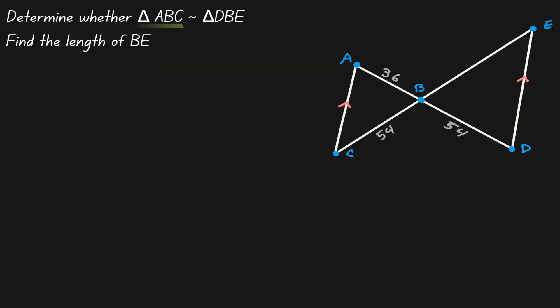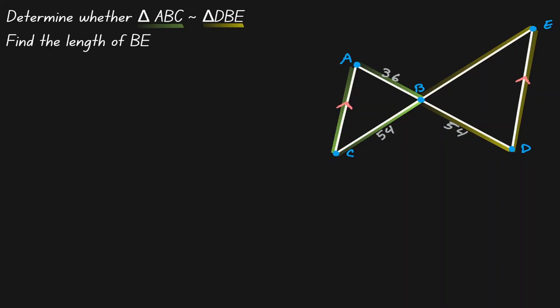Triangle ABC is the triangle on the left, and triangle DBE is the triangle on the right. Notice that we have two pairs of parallel lines, AC and ED. Let's consider CE as if it was our transversal, and if that is the case, then notice that angle C is congruent to angle E. These are alternate interior angles, so let's annotate that angle C is congruent to angle E.